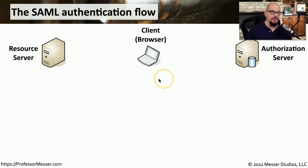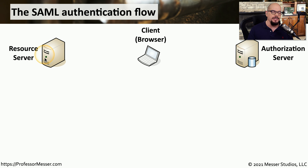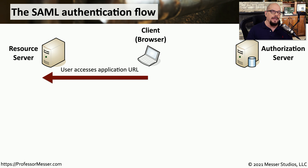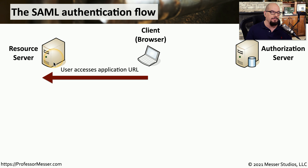The SAML process is relatively straightforward. Let's say you're in a browser needing to access a third party site, which we'll call our resource server. But we want to authenticate to that resource server using credentials that exist on a completely different service, and that service provides a way to authorize those credentials through an authorization server. The first thing we're going to do is try to access the application — we'll go to our browser and put in the website to gain access to that particular site.